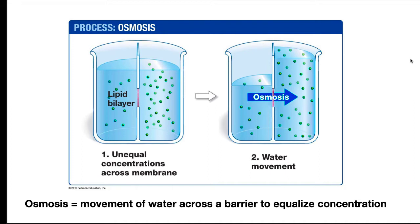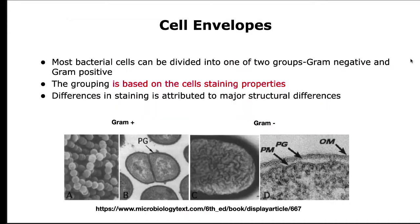The cell wall counters this pressure and keeps the cell together. Most bacterial cells can be divided into one of two groups, gram-negative or gram-positive. This is based upon the cell's staining properties, which in turn is attributed to major structural differences in their cell walls.